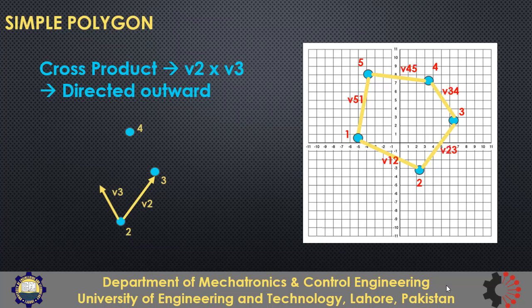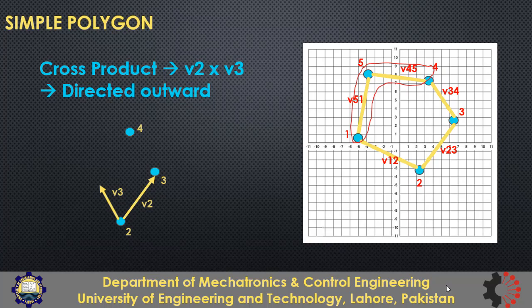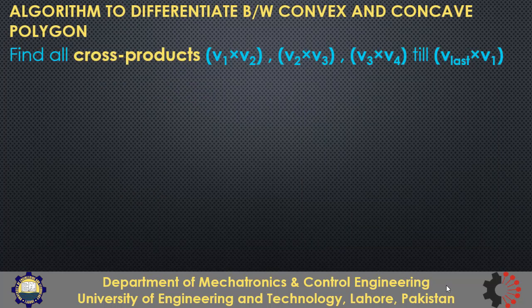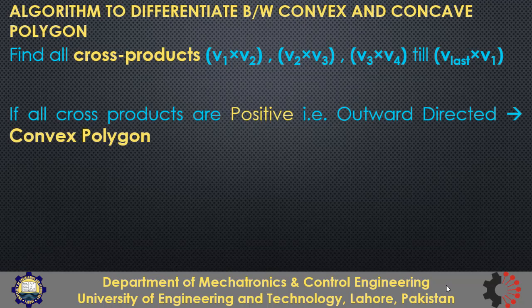Looking at the polygon with vectors labeled v12, v23, and so on, we check each consecutive pair. The first cross product is directed outward, and so is the next. Repeating for all remaining pairs — including the last pair formed by the last and first vectors — all cross products are directed outward. This indicates the polygon is convex. So the algorithm is: find all cross products, and if all are positive (directed outward), the polygon is convex.